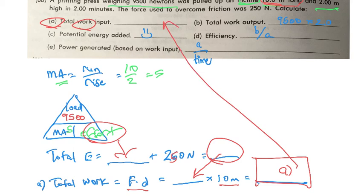All right, now how can we find the total work output? Well, that's what's actually being accomplished, and that is the 9,500 newtons moving up 2 meters. So we're going to take 9,500 times the 2. I'm going to let you do that calculation. I'm not going to give you the answer. You do the math.